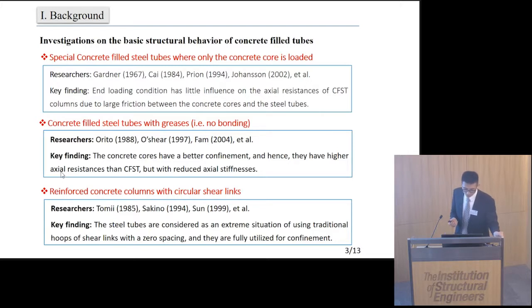In 1985, Tomii firstly investigated the behavior of reinforced concrete columns with circular shear links. In their study, the steel tubes are considered as an extreme situation of using traditional hoops or shear links with zero spacing, and they are fully utilized for confinement.